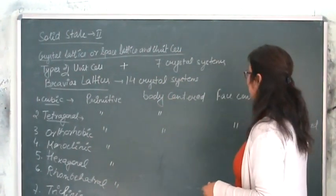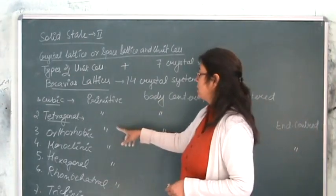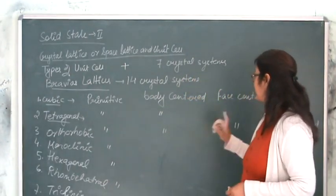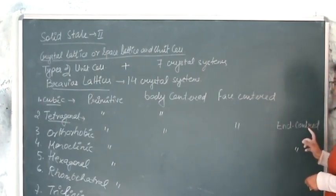Orthorhombic shows all the 4 kinds of arrangements: primitive, body centered, face centered and end centered.